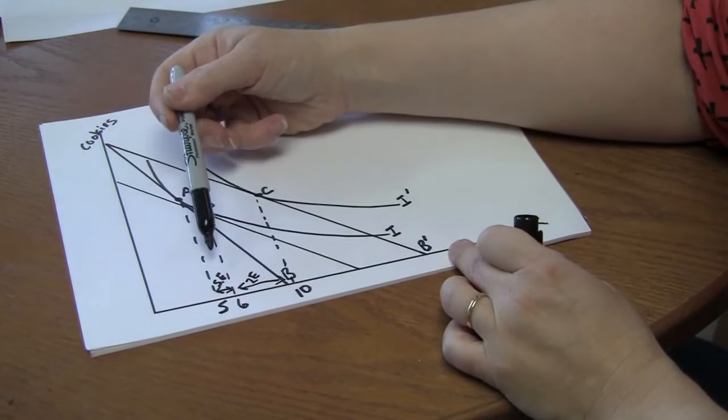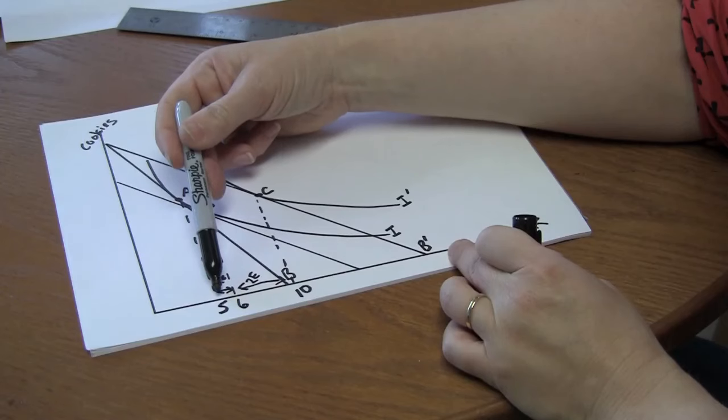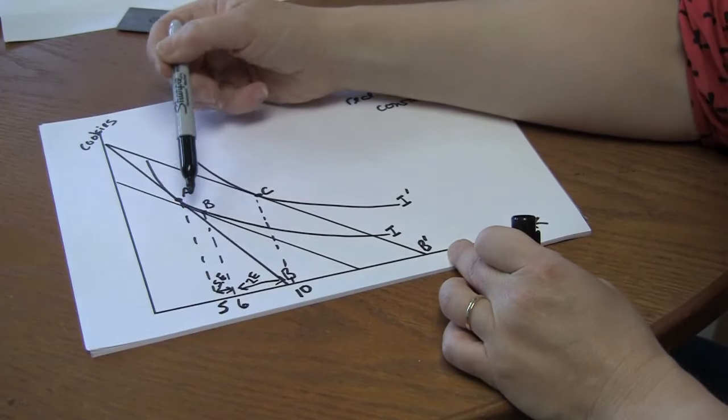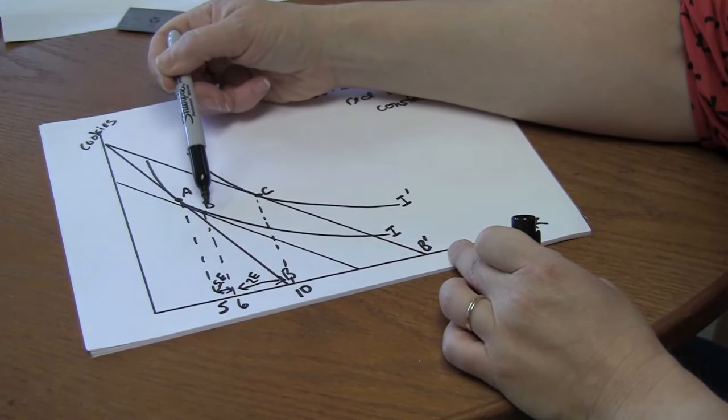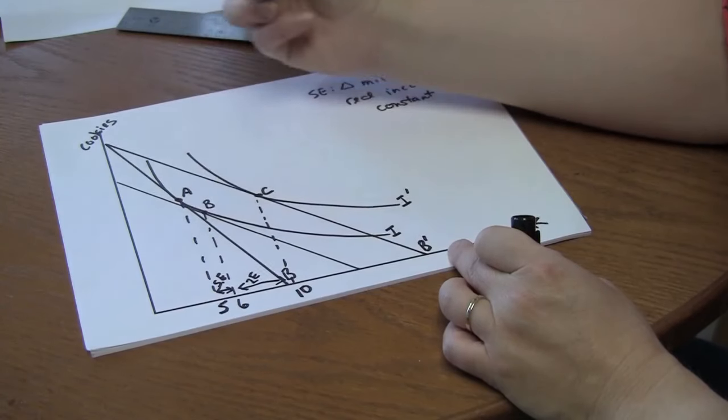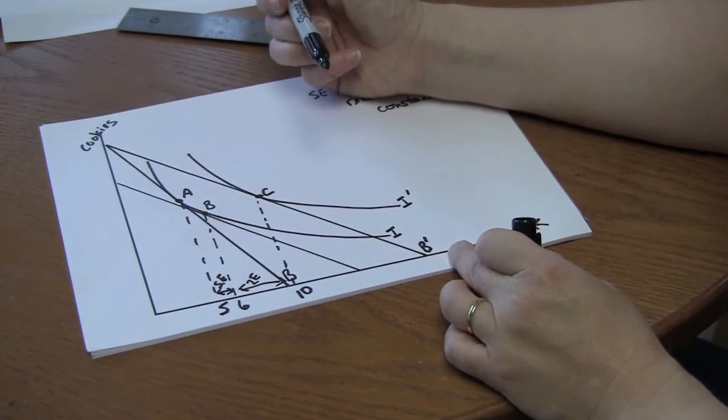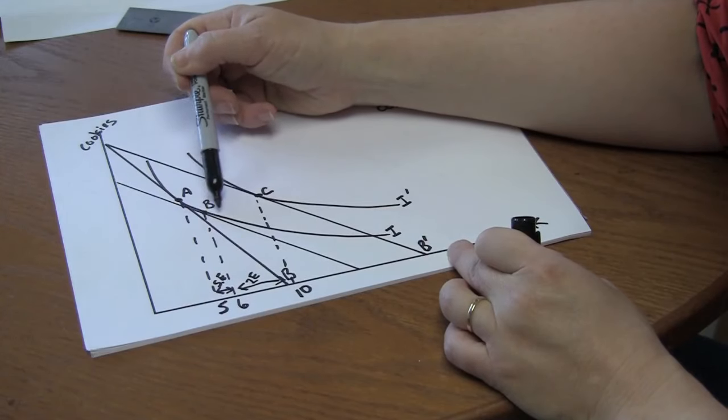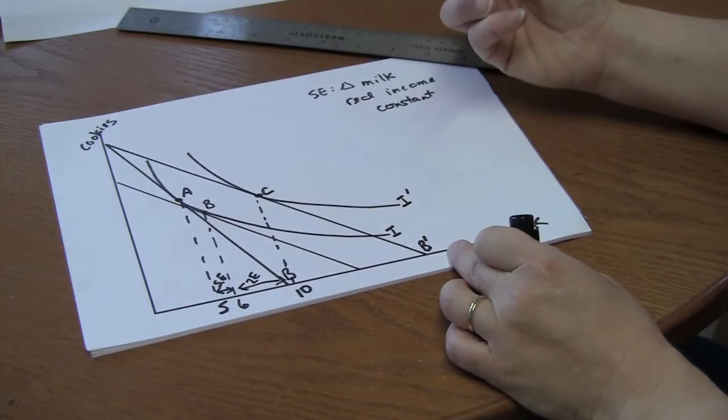So from five to six, this distance here, this horizontal distance between A and B is the substitution effect. The distance between B and C is the income effect.